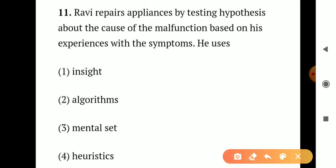Question number 11. Ravi repairs appliances by testing hypotheses about the cause of malfunction based on his experience with the symptoms. He uses: Option 1 - insight. Option 2 - algorithms. Option 3 - mental set. Option 4 - heuristics. Ravi tests hypotheses based on his experience, using a systematic approach to solve problems. He uses algorithms. So the correct answer is Option 2 - algorithms.